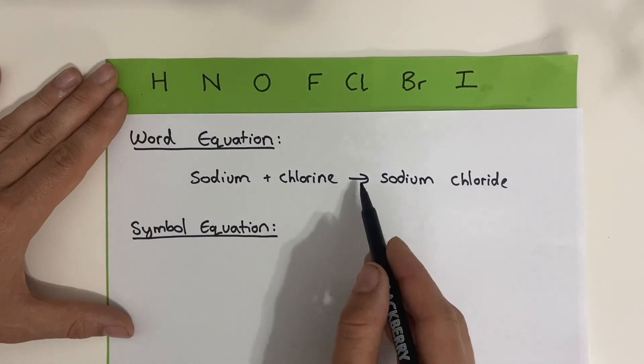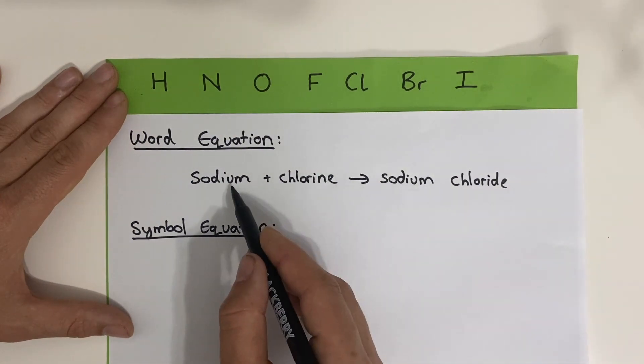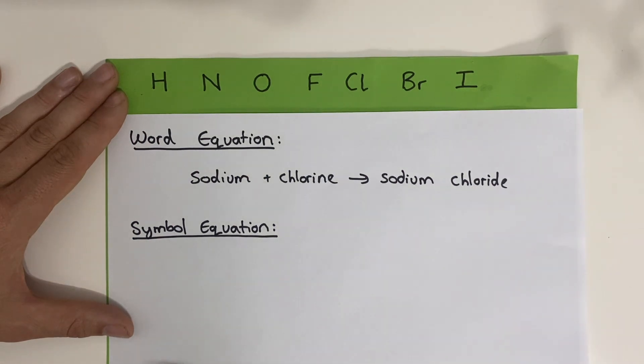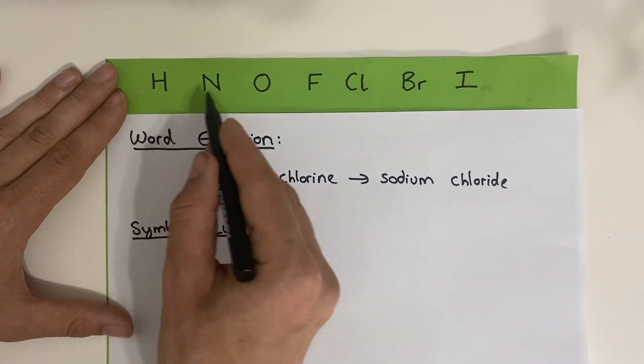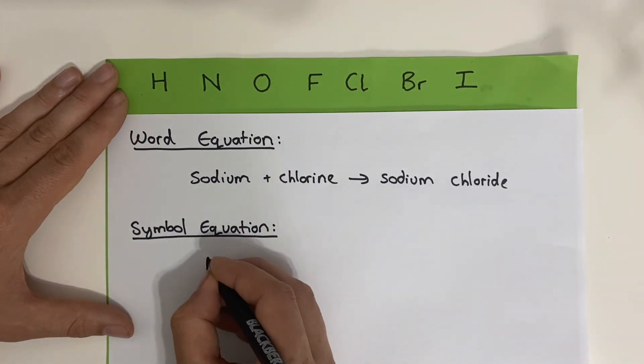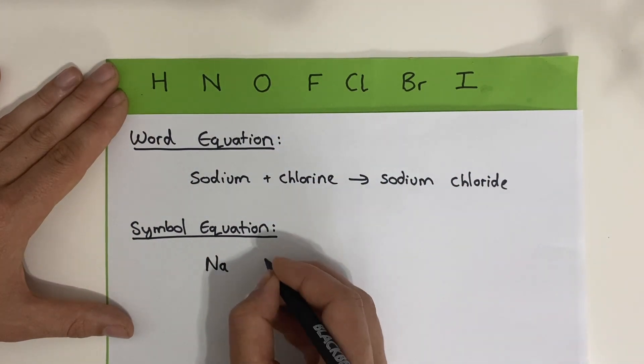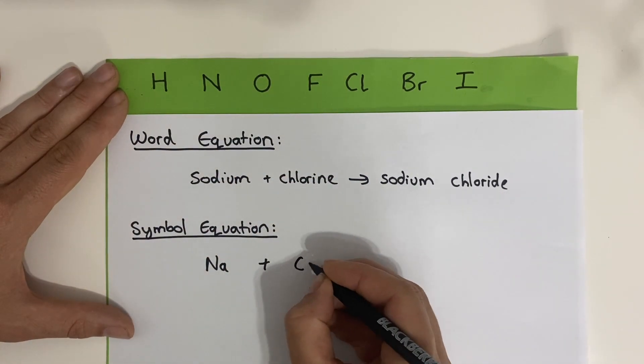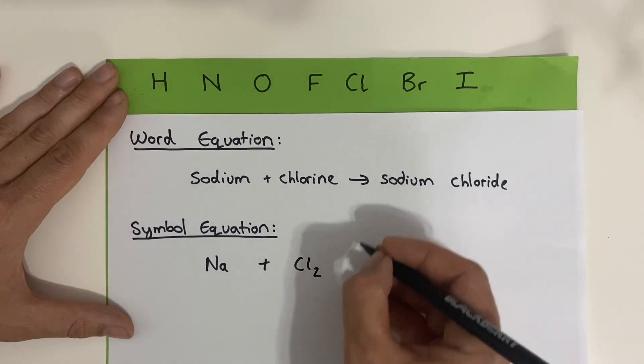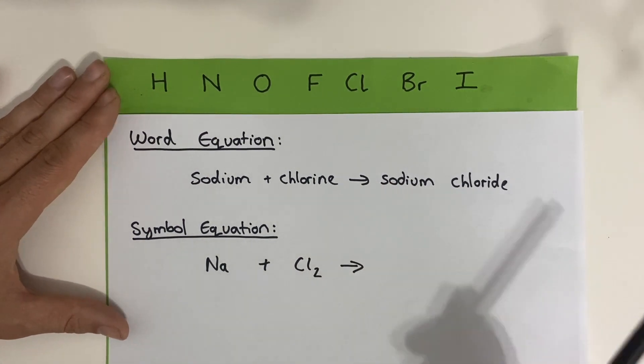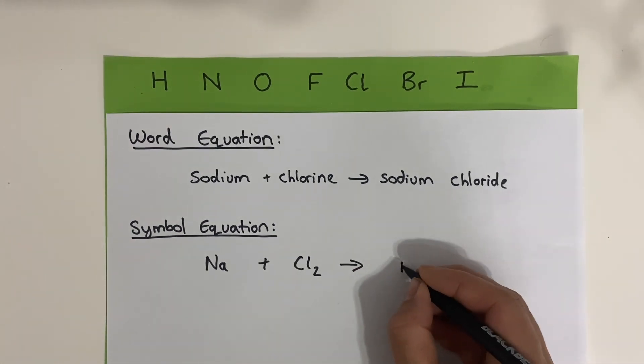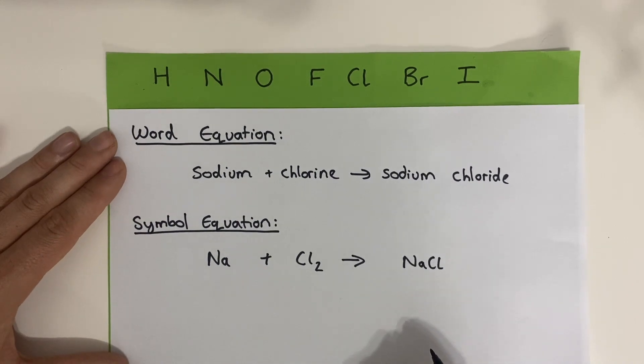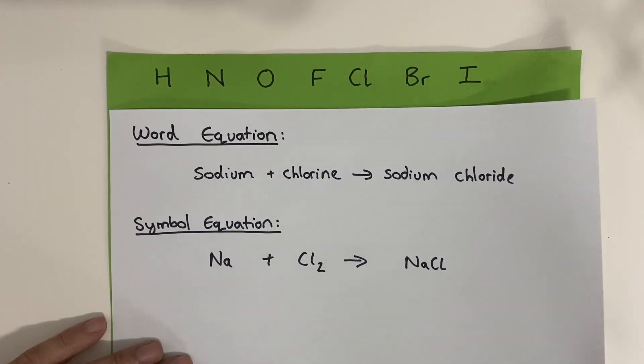Sodium plus chlorine forms sodium chloride. Sodium and chlorine are our elements, so I'll do those first. Sodium chloride is a compound. I'll do that next. Sodium, is it one of our diatomics? No, it's not. So I write its symbol, which is Na, by itself. Chlorine, is it a diatomic? Yes, it is. So I don't write just Cl, but I write Cl little two. Copy in our reaction arrow. Sodium chloride. So the formula for sodium chloride is NaCl, which you'd use a table of ions to work out. It's not balanced, but we'll leave it there for today.